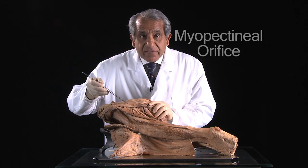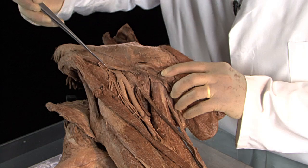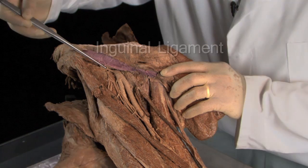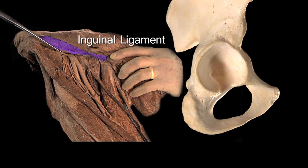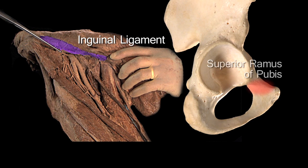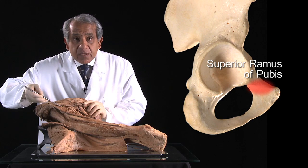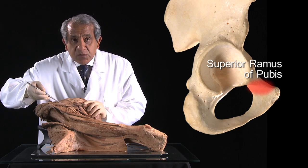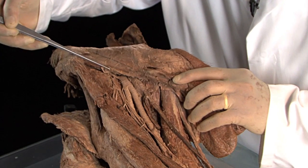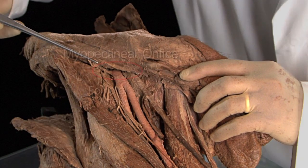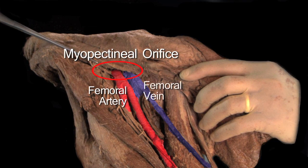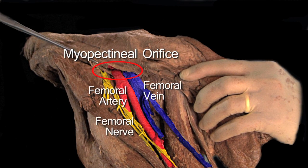The myopectineal orifice is situated between the inguinal ligament in front and the superior ramus of the pubis behind, which I can actually feel with my forceps. So it's through that wide window, the myopectineal orifice, that the femoral artery, the femoral vein, and the femoral nerve cross over into the thigh from the abdominopelvic cavity.